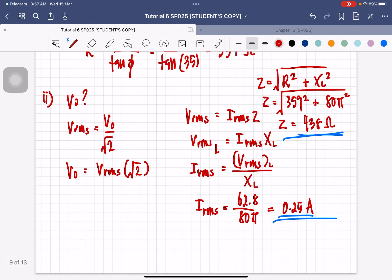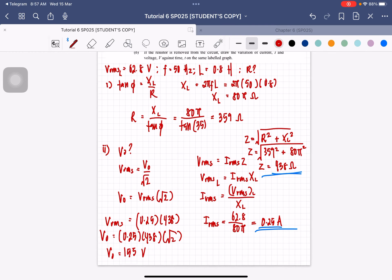So now we have Z, we have IRMS. So we can substitute in our equation of VRMS. So IRMS is 0.25, Z is 438. So we get VRMS to be equal to... So now V0 is going to be equal to RMS voltage times square root 2, which will then give you the peak voltage to be equal to 155 volt. So that is the solution for Roman numeral ii.